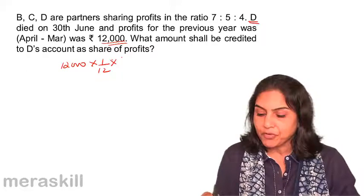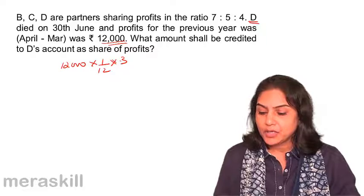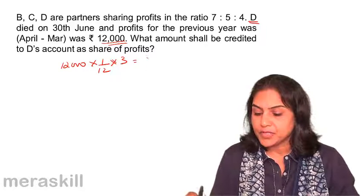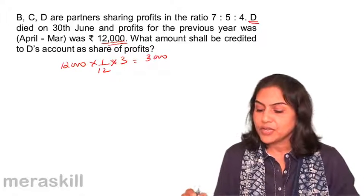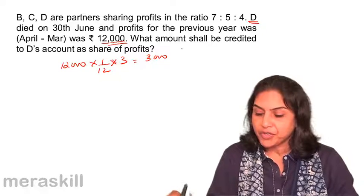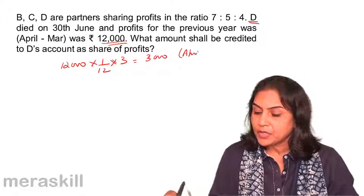So, what is the profit for 3 months? That gives us 3,000. 3,000 is the profit for the period April to June.